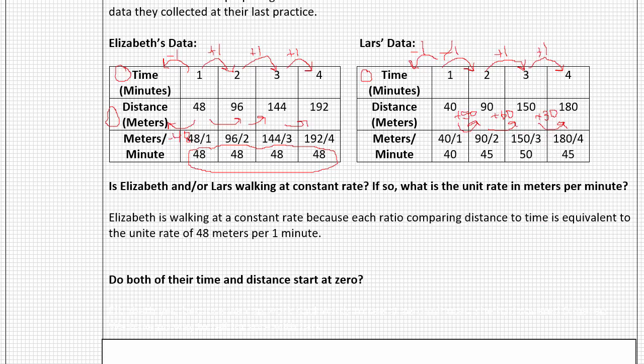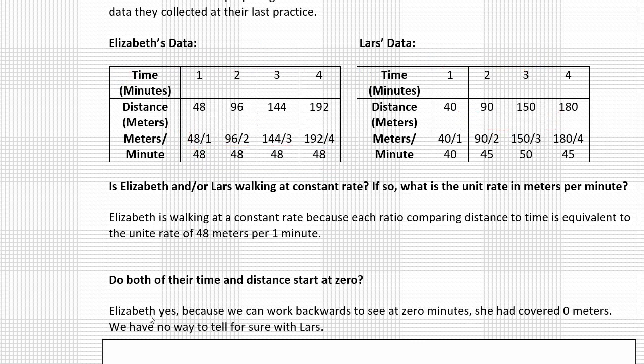Therefore, to answer our question, do both of their time and distance start at zero, we'd say something like this: Elizabeth does, yes, both of their time and distance start at zero, because we can work backwards and see at zero minutes, she covered zero meters. But we have no way to tell for sure with Lars. Can you tell at this point, using the criteria for a proportional relationship, whether Elizabeth or Lars, or both of them, represent a proportional relationship? Let's go ahead and continue our investigation.